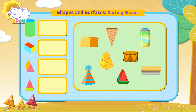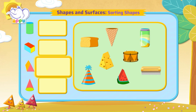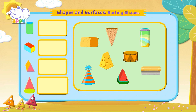All the cylindrical shapes will have to be placed in this box. All the cuboid shapes in this box. All the prisms in this box and the cones in this box.